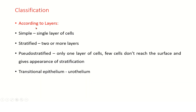Now let us classify epithelium according to layers. If we see a single layer of cells, we call it simple epithelium. If we see two or more layers of cells, we call it stratified epithelium. If the cells are actually only one layer but still appear as multiple layers, that is called pseudostratified epithelium, which is especially seen in the respiratory tract. Then there is transitional epithelium — example: urothelium. In the urinary bladder when relaxed, there are three to four layers of cells, but when stretched with accumulation of urine, they become two layers. This transition in the number of layers gives it the name transitional epithelium.